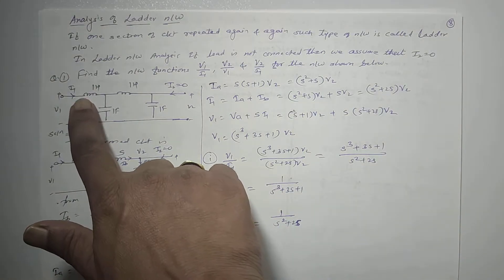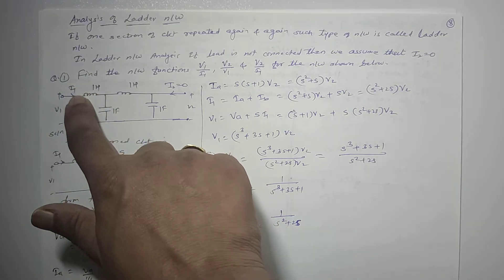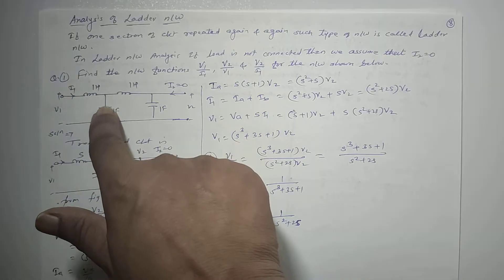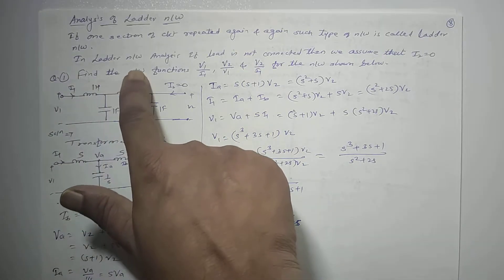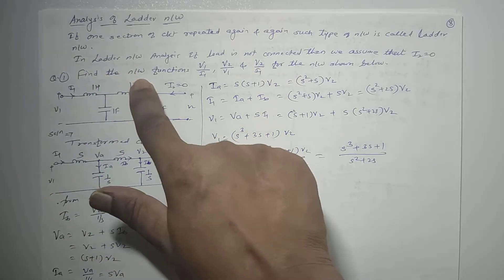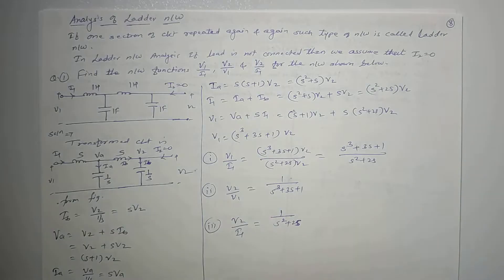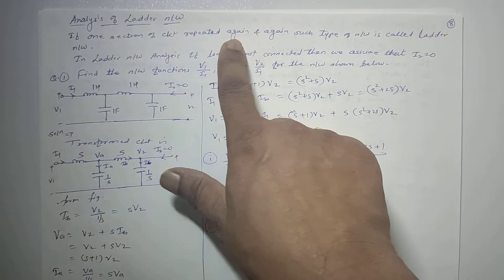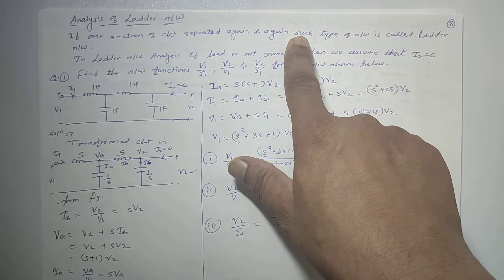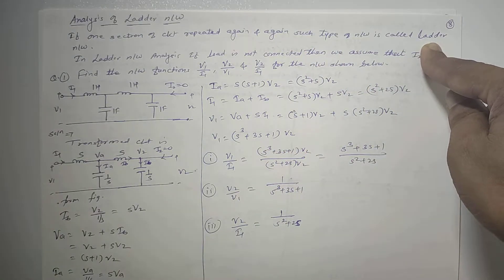For example, here we have an inductor-capacitor — a 1 Henry, 1 Farad LC network. This LC network will be repeated: one LC section, another LC section, third LC section, fourth LC section. If one section of the circuit is repeated again and again, such type of network is called a ladder network.